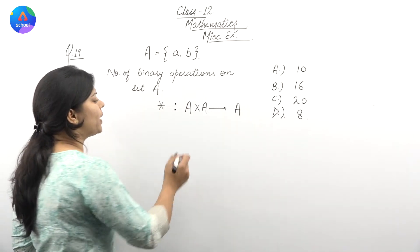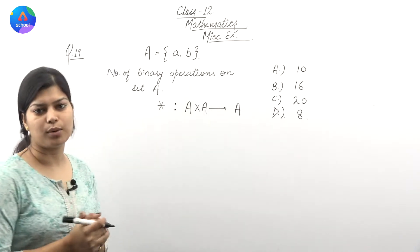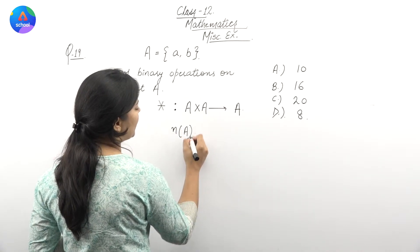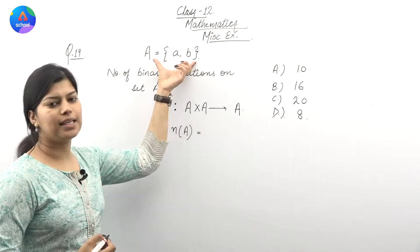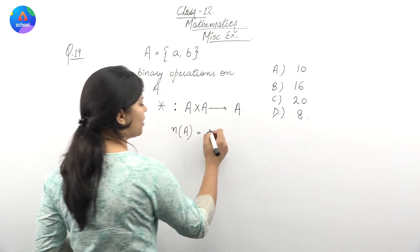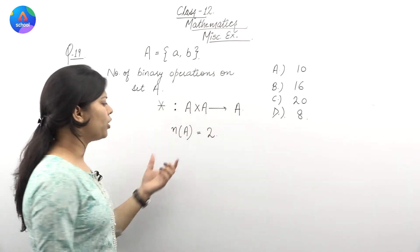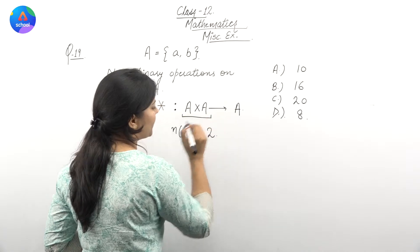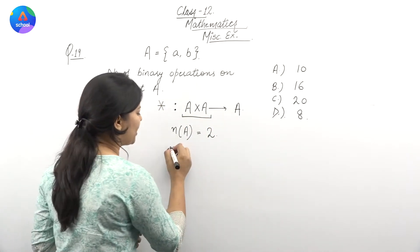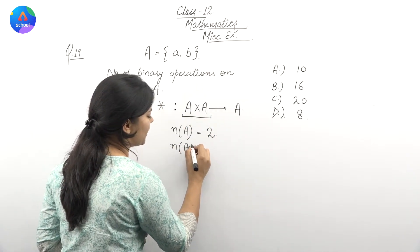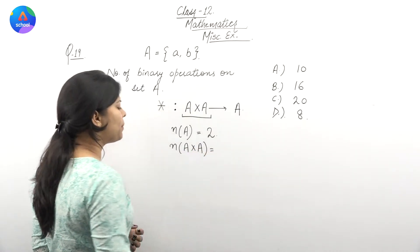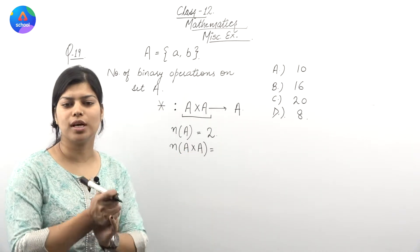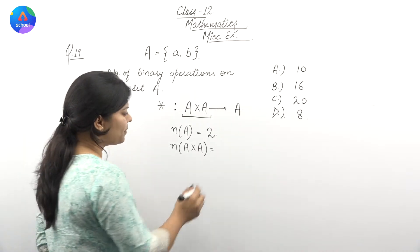Basically, star which is a binary operation, is a function from A cross A to A. Now, how do we find the number of binary operations? First, find the number of elements in set A. Then we need the number of elements in A cross A.